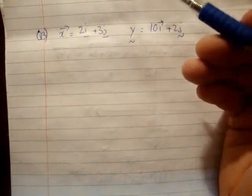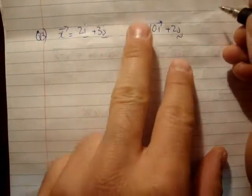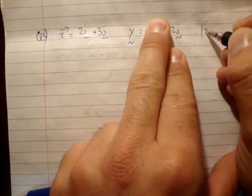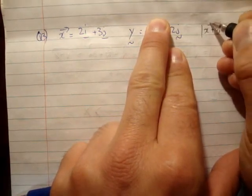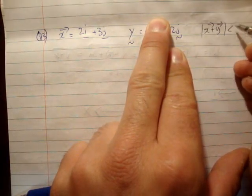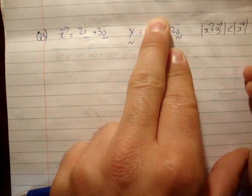Remember again, just pick one of those and use them all to kind of illustrate it. Okay, so we have to show the following: you've got to show that the magnitude of x plus y is less than the magnitude of x plus the magnitude of y.